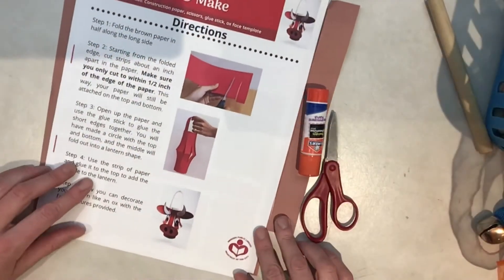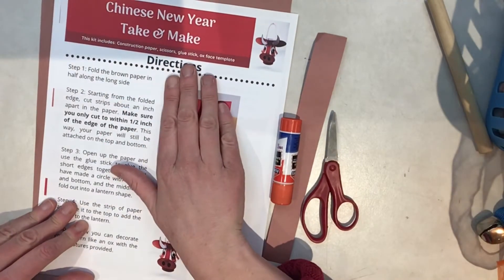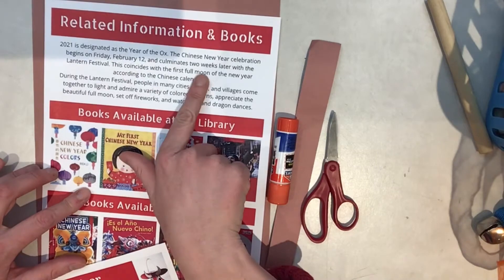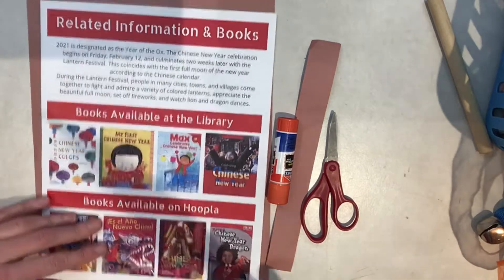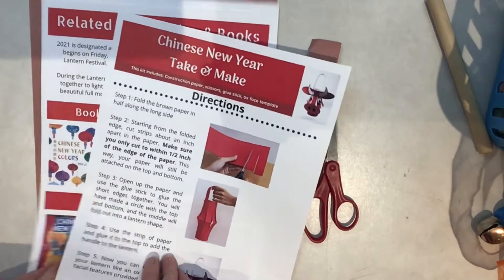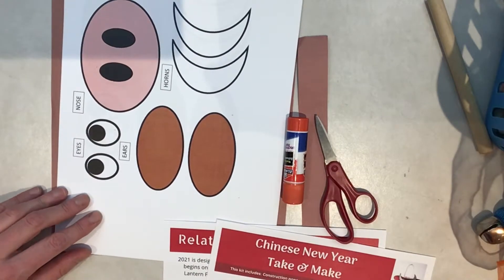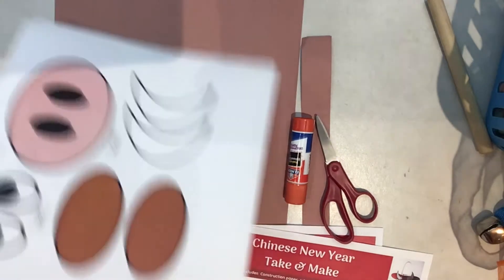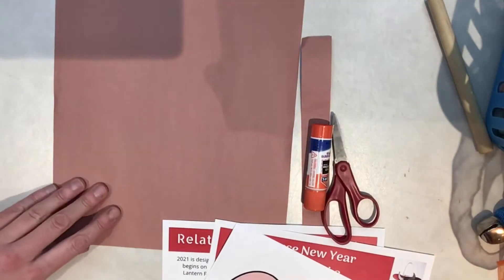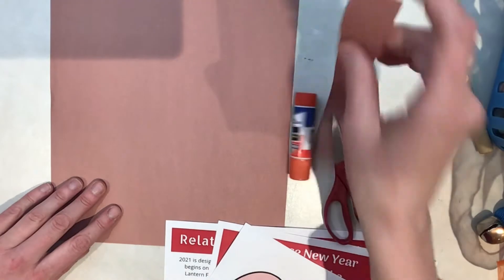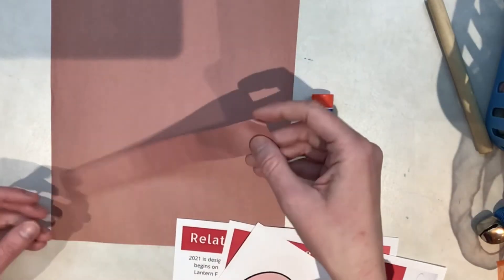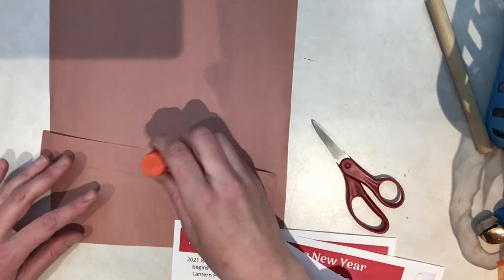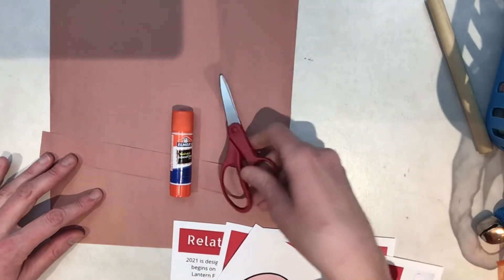So in your kit, you're going to get instructions on how to make your lantern, related books and information, and a template with the ox's face on it. You'll also receive a piece of brown paper and a strip of brown paper to make the handle, as well as a glue stick and a pair of scissors.